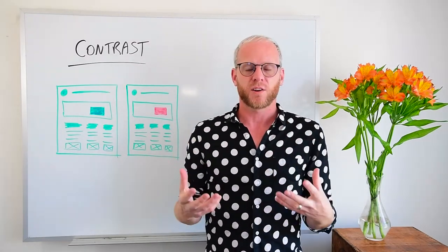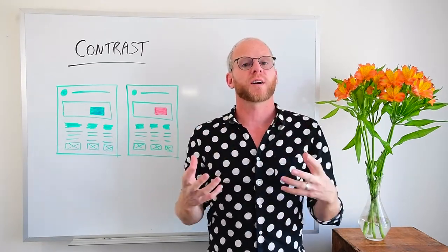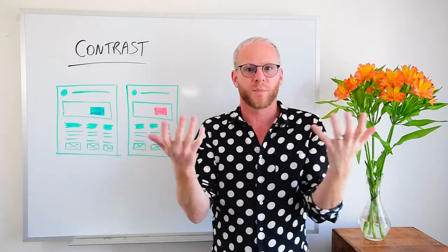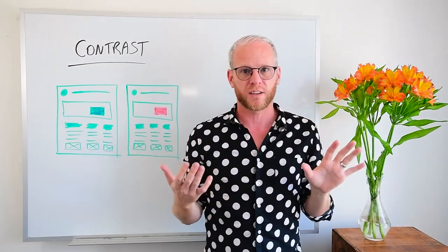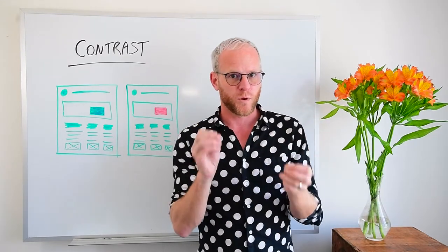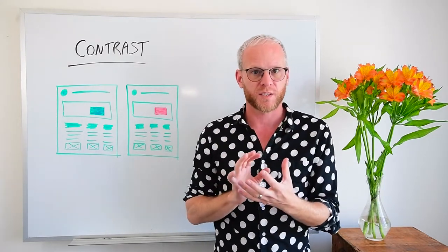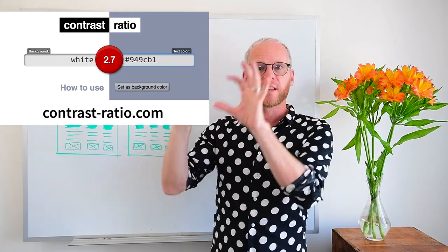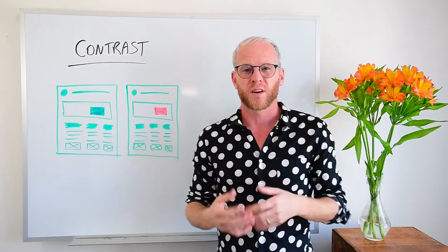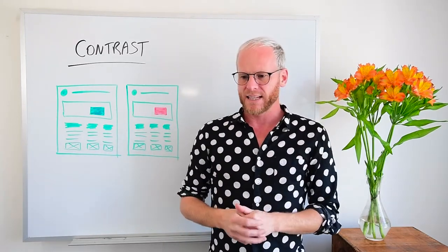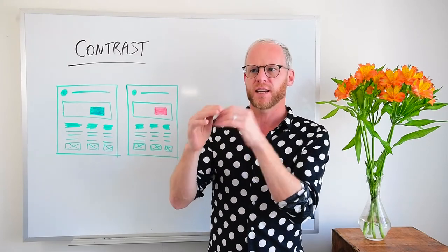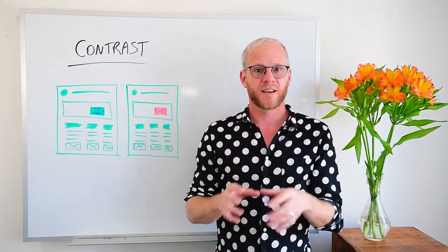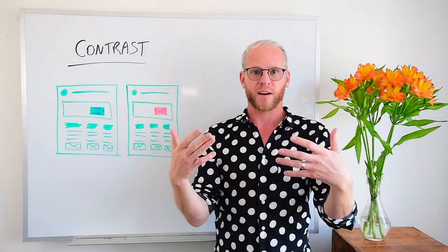Contrast can have a big impact on readability, sometimes negatively. There's a great tool called the Contrast Ratio Calculator. It allows you to determine the contrast between a foreground element — such as your headline or a button — and the background, which might be a background image, solid color, or background video. Background video is the worst candidate for causing contrast problems. You put in the color of your background and your headline or button to determine the ratio. You want to aim for around a score of 14; 21 is the best, and anything above 7 is good.